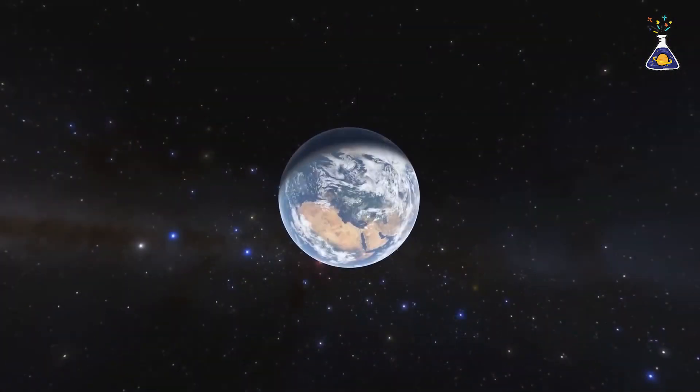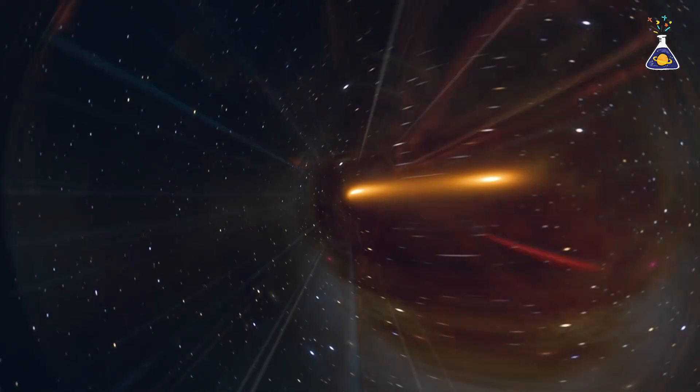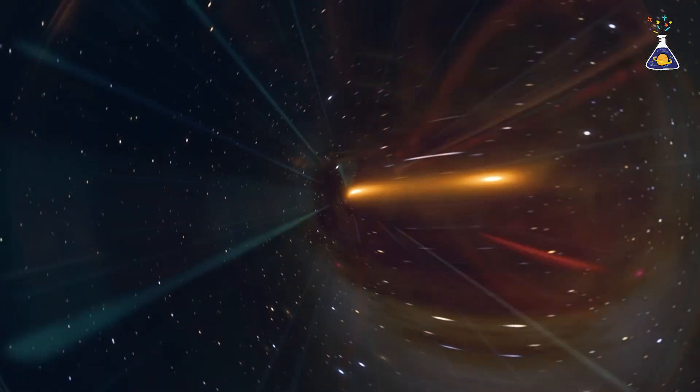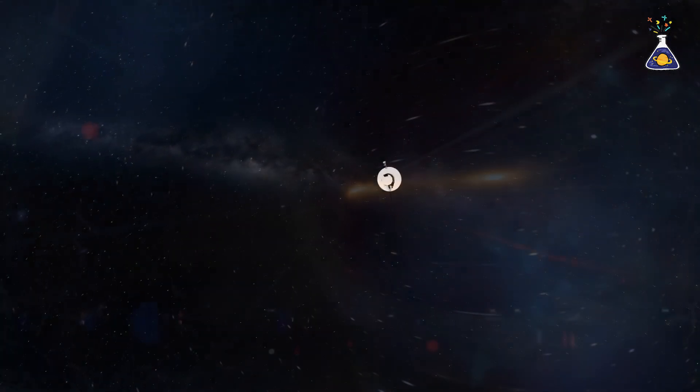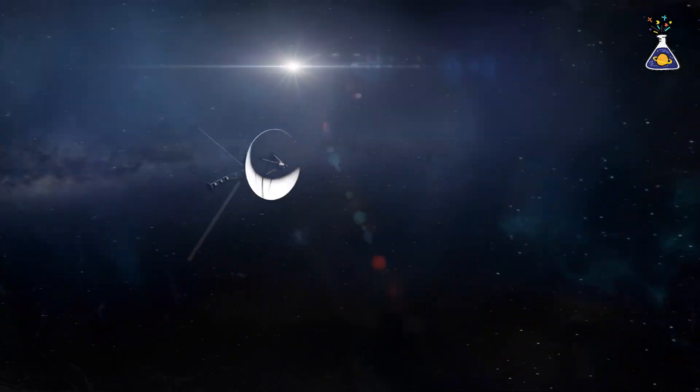The closest star to Earth, Proxima Centauri, is about 4.24 light-years away. Even at the speed of light, it would take over four years to get there. And with current human technology, it could take thousands or even tens of thousands of years.